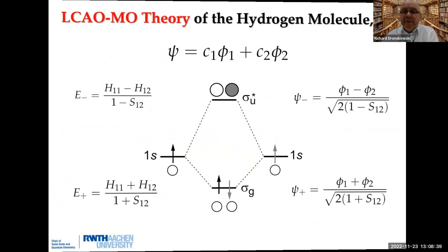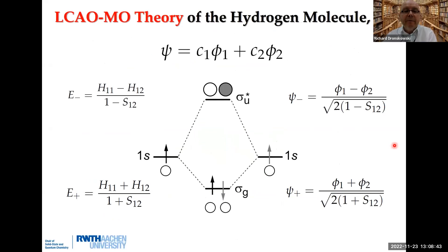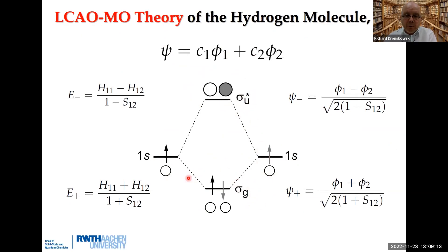So let us remind ourselves how we do covalent bonding using molecular orbital theory. We're talking about the hydrogen molecule H2. We combine atomic orbitals linearly — linear combination of atomic orbitals — to yield molecular orbitals. There is one 1s orbital on the left atom and one on the right atom. Through superposition, we arrive at the bonding sigma-g molecular orbital and the antibonding sigma-u* orbital. For the bonding orbital, the atomic orbitals are in phase — same plus-minus sign. This is in contrast to the antibonding combination, where the phases are different: plus-minus. This is covalency.